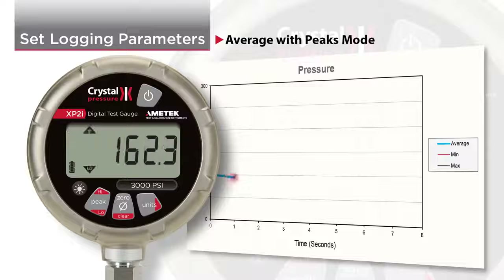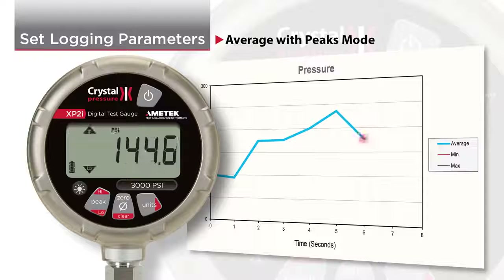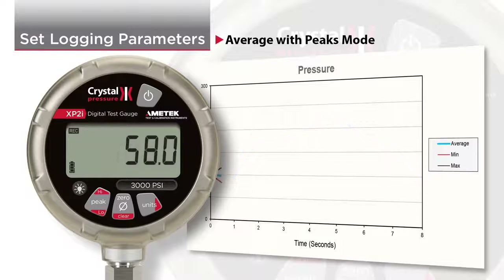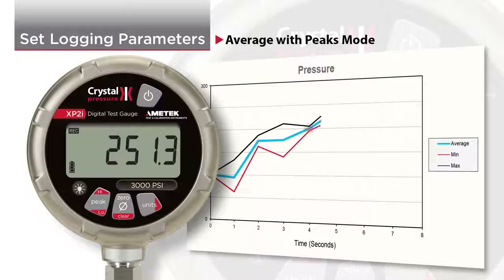Average with peaks will record the average between the logging intervals, just like average mode, but it also records the highest and the lowest readings that occur between logging intervals.